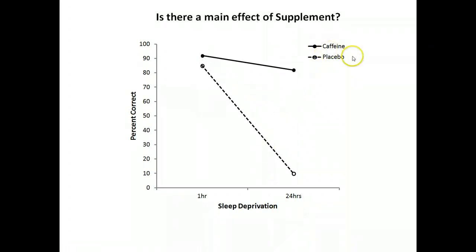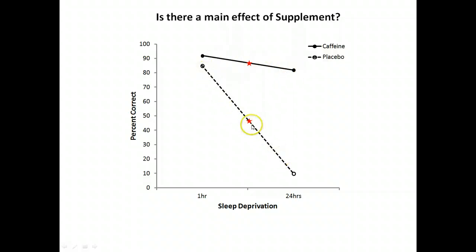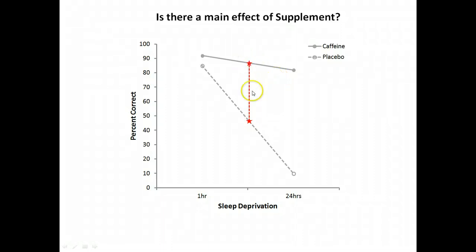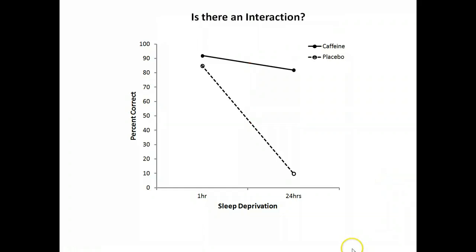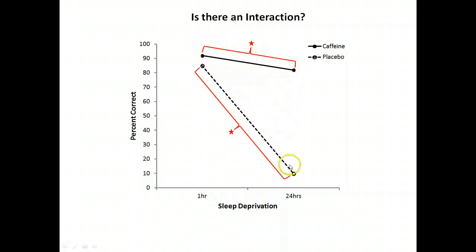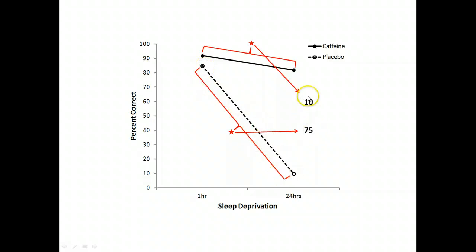Likewise, we ask whether there's a main effect of supplement — the difference in performance between supplement levels whilst ignoring sleep deprivation. We find the average for the caffeine group and the average for the placebo group and ask whether these two are different. There is a main effect of supplement: performance is generally better in the caffeine group. For the interaction, we examine whether the levels of one factor influence performance across the levels of the other — it's a difference of differences. The difference for the caffeine group is small (~10%), but for the placebo group the detriment is much larger (~75%), so this difference of 10 is likely significantly different from 75, indicating an interaction.